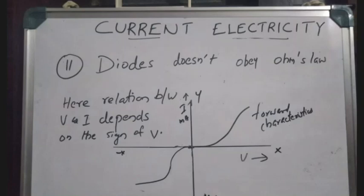Semiconductor diodes do not obey Ohm's Law. In the case of a diode, V and I are not linearly related. The relation between V and I depends on the sign of V. This is shown in the V-I graph of the semiconductor diode.